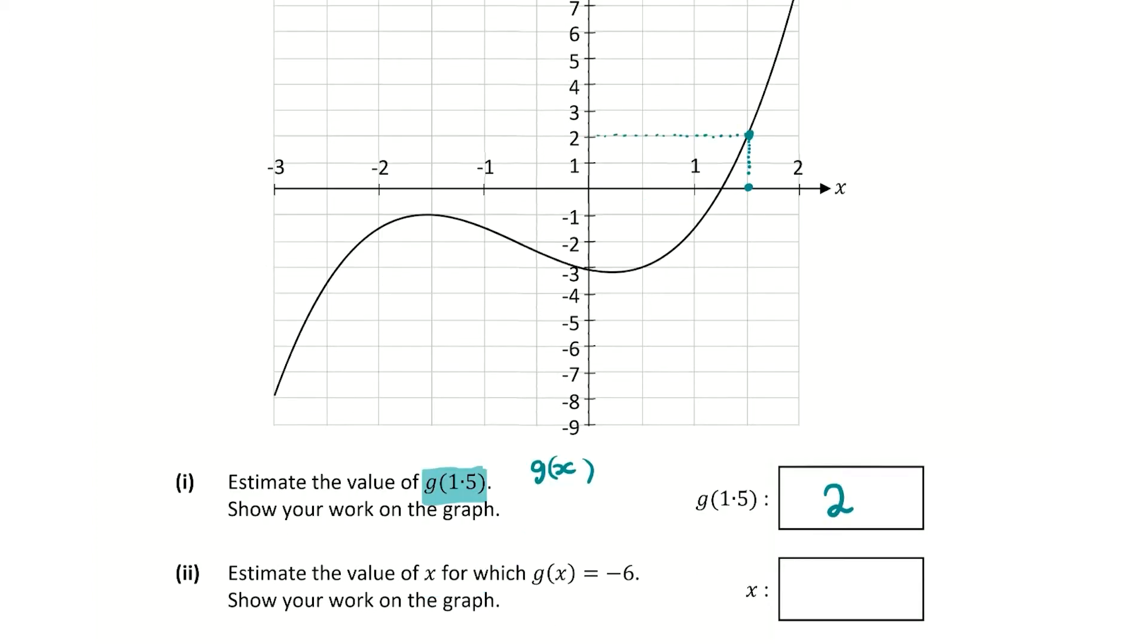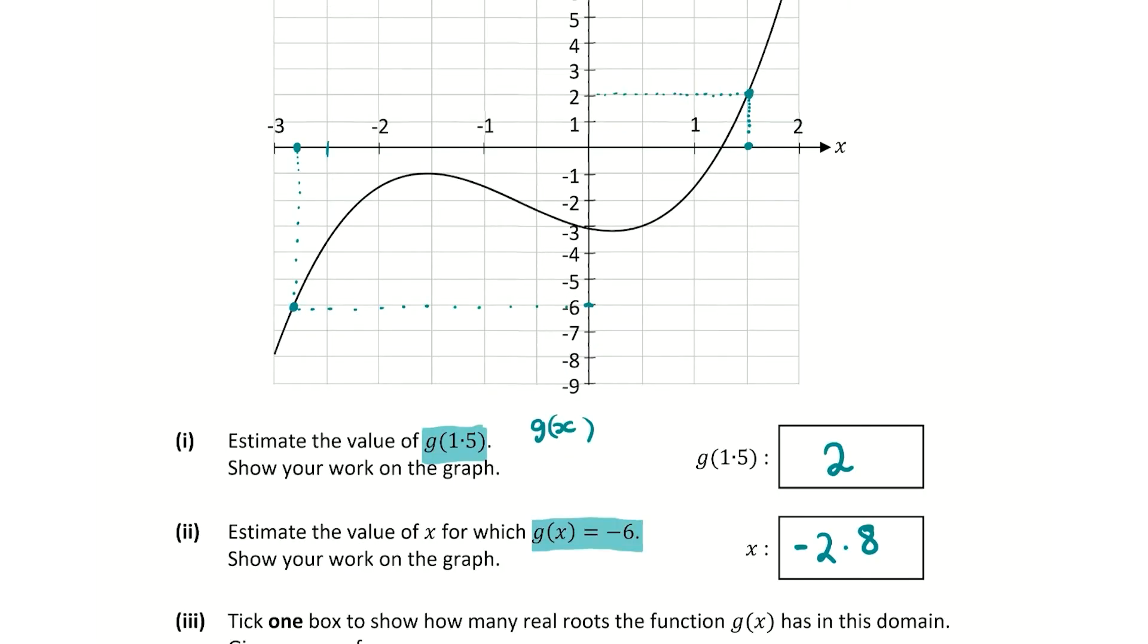Now we're asked to estimate the value of x for which g(x) equals -6. So the y value is -6. What is the x value? Let's have a look at -6. So where's that going to hit our graph? It hits it right here and then we go straight up. This here would be -2.5. So I'm going to say that is -2.8. So that's the value of x when the graph equals -6.